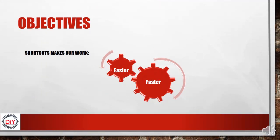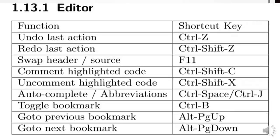As we all know, shortcuts make our work easier and faster. You don't have to navigate to the ribbon before you can build your projects — you can simply press two keys and your project will be built. It makes everything faster and easier. Now we are going to see all the shortcuts that we need in Code::Blocks.